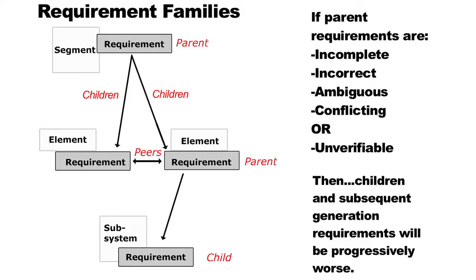The key here is that if at one level you do a bad job of defining your requirements — if your parents are not defined well — your children are probably not going to come out well either. If you have incomplete, incorrect, ambiguous, conflicting, or unverifiable requirements at one level, the requirements you build at the next lower level are also probably going to be poor. So: bad parents equals bad children.